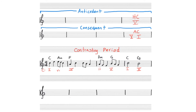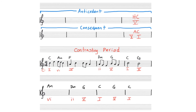Now let's explore the contrasting period form. In a contrasting period form, the second phrase is significantly different than the first phrase. The easiest way to do this is to base the new phrase on a different motive than the first phrase. Another way to go about it is to take a motivic idea from the first phrase and develop it into a completely new idea using our ideas of motivic development. You could start with a new chord progression in the same key and then compose a new motive and develop that new motive into a new musical phrase.